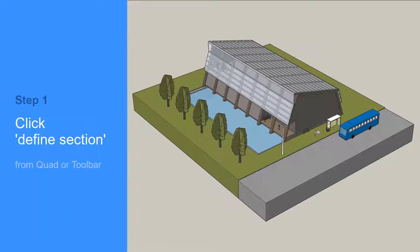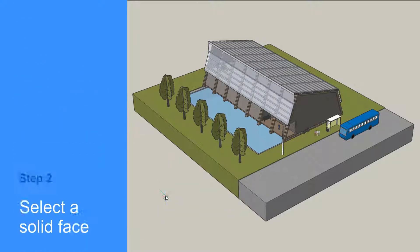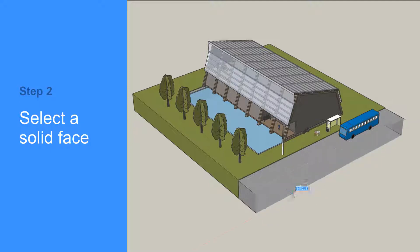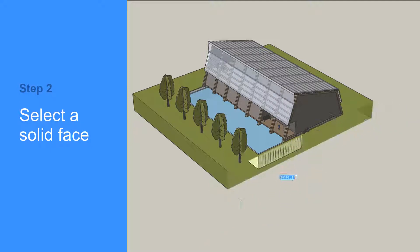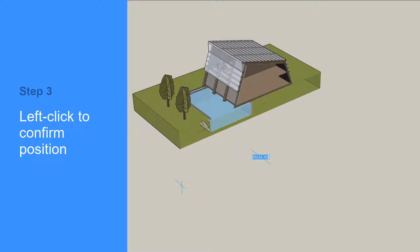You can use sections to cut through your model dynamically. A section can be created by opening the quad and left-clicking Define Section, found under the Model tab. Then, selecting any solid face in your model will create the section, parallel to the selected solid face.